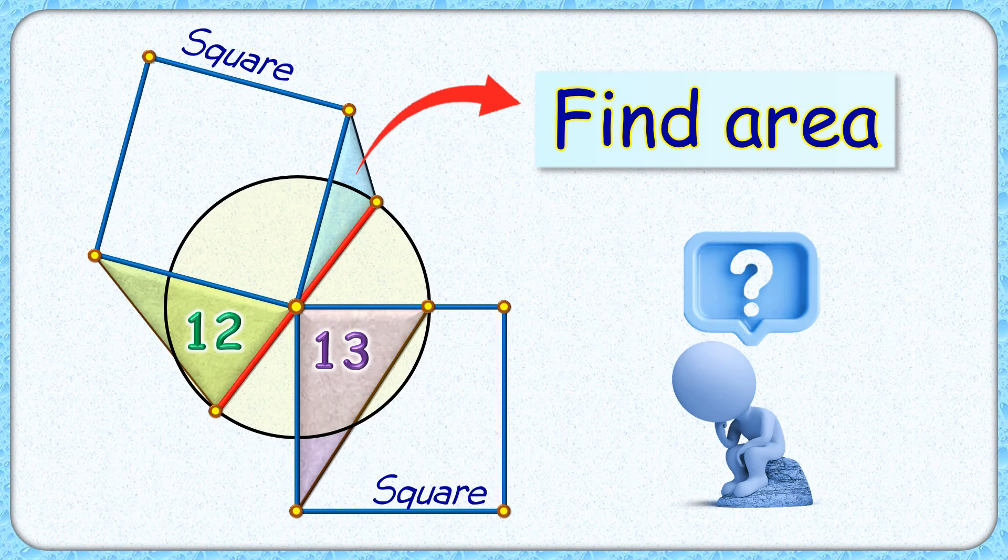Welcome everyone to this interesting question. Given to us are two congruent squares sharing a common vertex. With this vertex at the center, a circle is drawn and this red line is the diameter of the circle. Given is area of this green and purple triangle is 12 and 13 cm square. The exciting part is with this limited data we have to find area of this blue triangle.